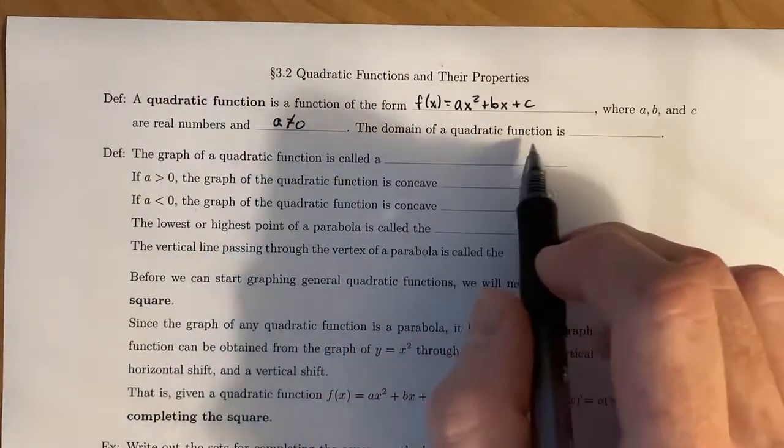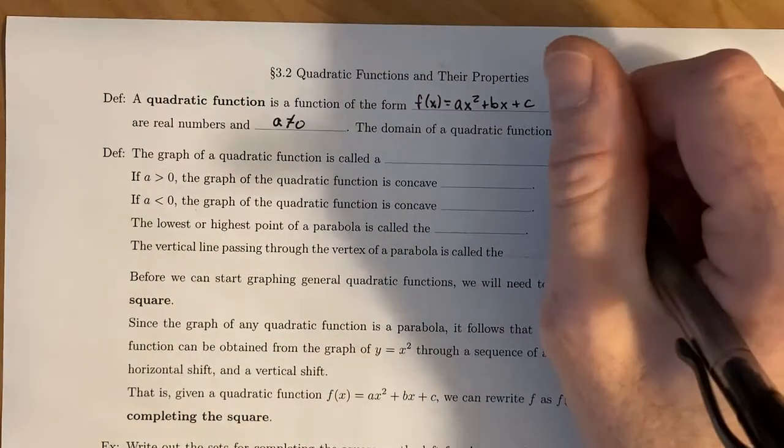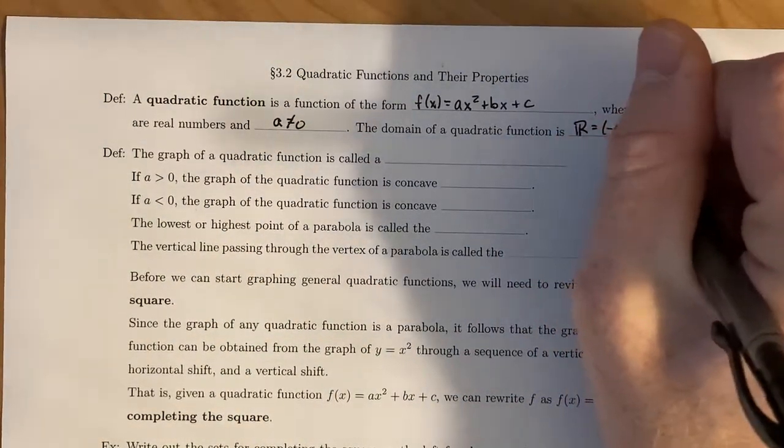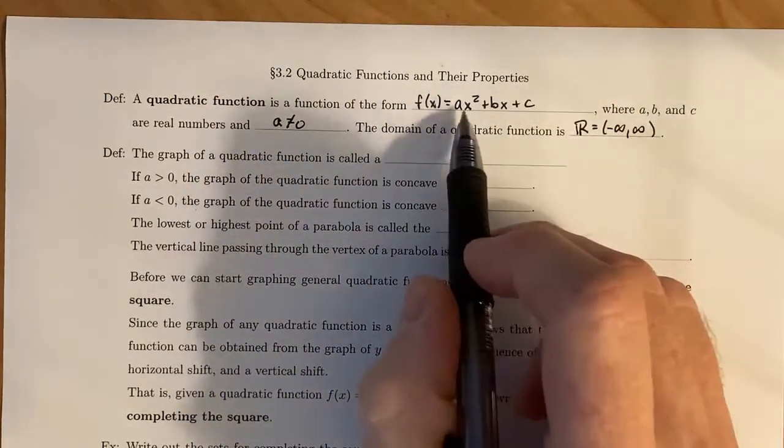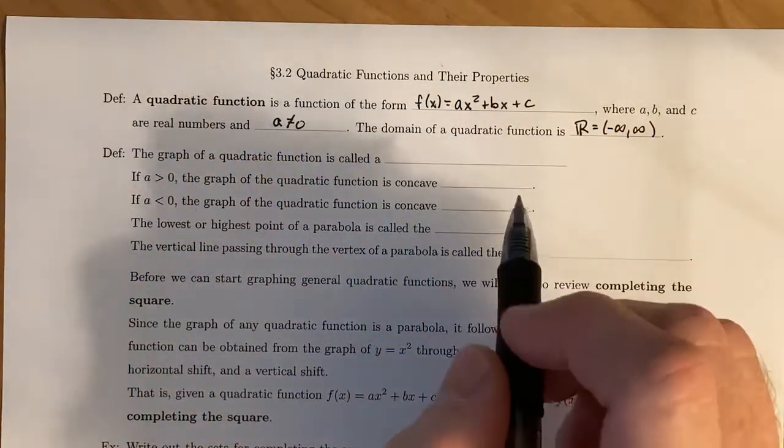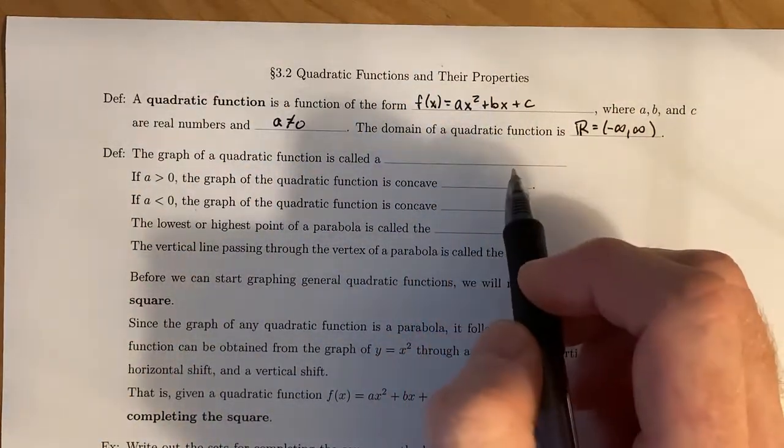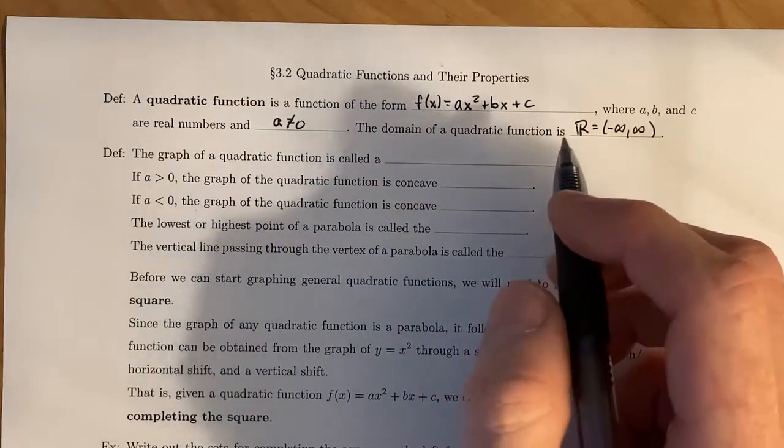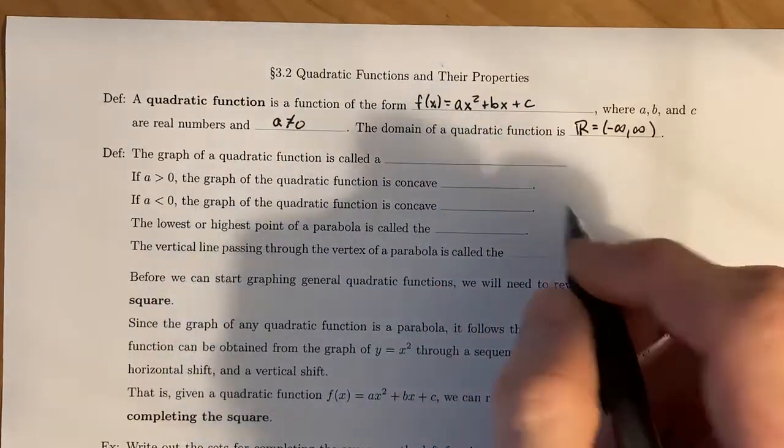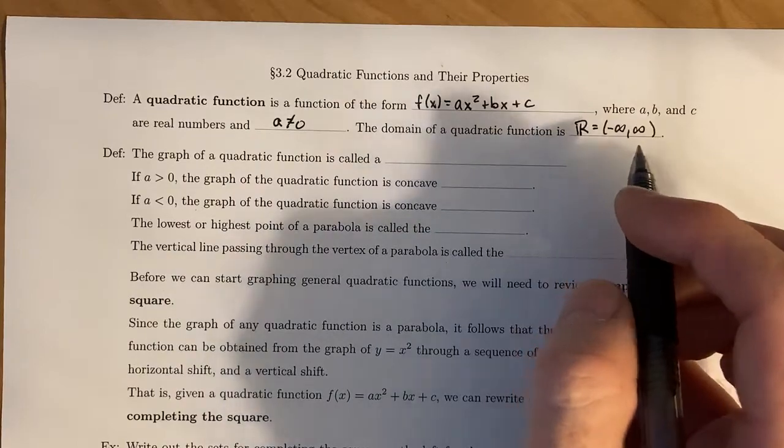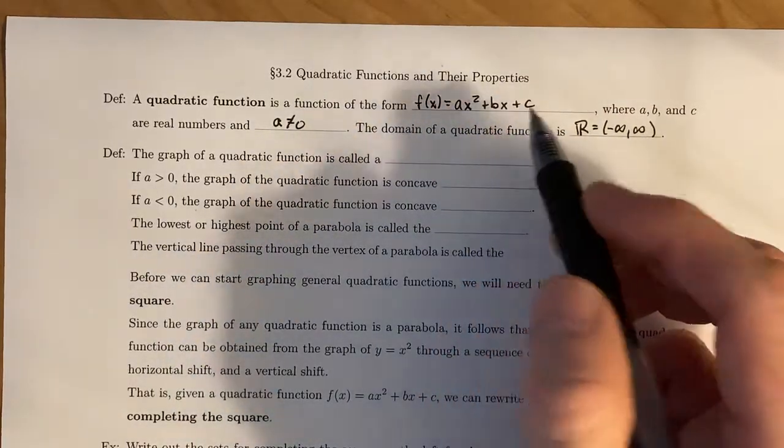Now the domain of any quadratic function is going to be all real numbers. You can take a number, you can square it, you can multiply it by another number, you can take that first number you started with, multiply it by a different number, and you can add all the results together. So there's no restriction on the domain, because it's just multiplication and addition.